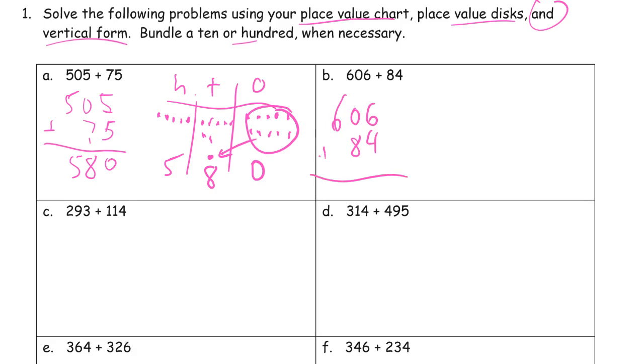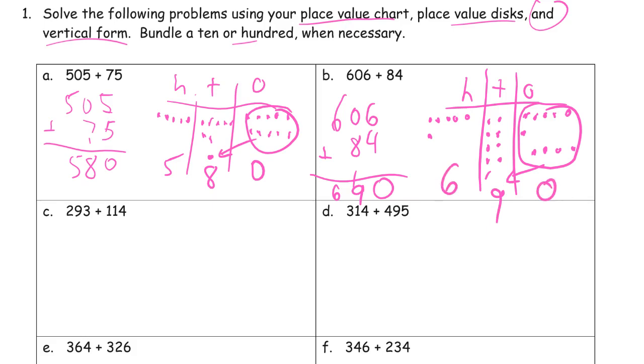606, 84. 6 plus 4 is 10. 8 and 1, 9 tens. And 600, 690. With the chip model, 606 - see how we use the 5 group rows? And 84, I'm going to have to use columns. You can see the 6 and this 4 right here is going to make 10. So there's our 10. And now I can see easily we have 9 tens. So we're going to have 0 ones left. And we still have the 6 hundreds. We didn't have to compose any hundreds.